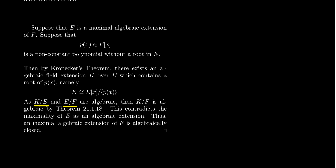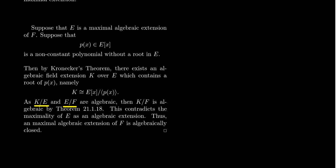By assumption, E is algebraic over F. By construction, K is algebraic over E, since K is just E adjoined the root alpha of P(x). By a previous result — Theorem 21-118 — if K is algebraic over E and E is algebraic over F, then K is algebraic over F as well. But this contradicts the maximality of E as an algebraic extension of F. So K and E must be the same, meaning E already had a root — a contradiction. Therefore, the maximality of E implies E is algebraically closed.